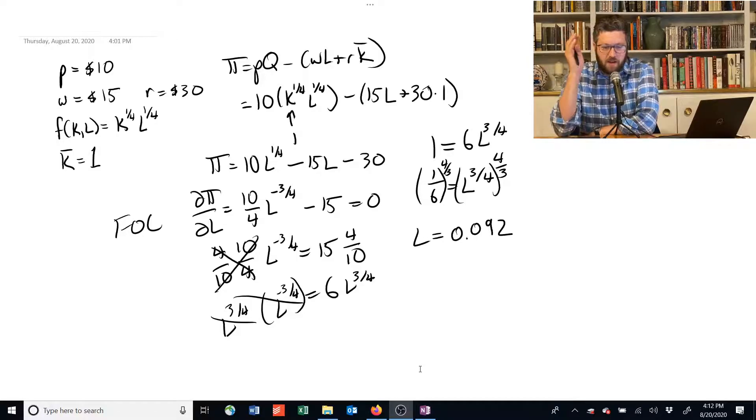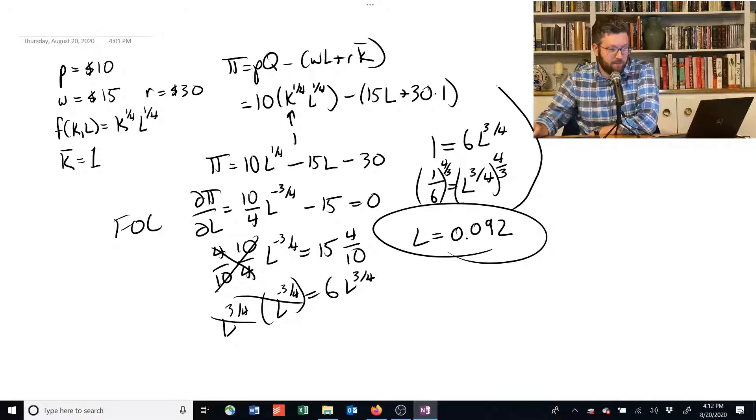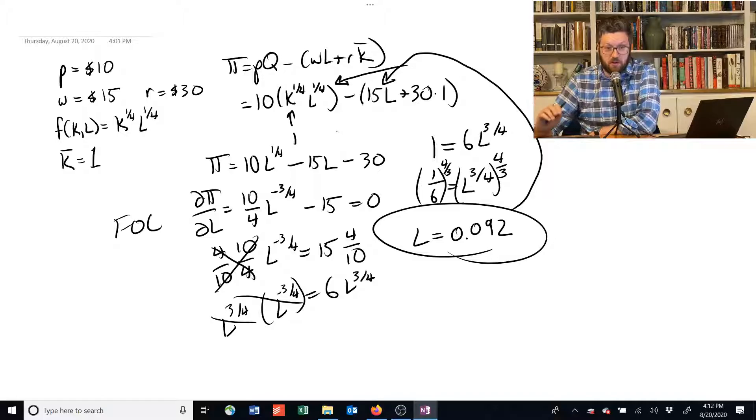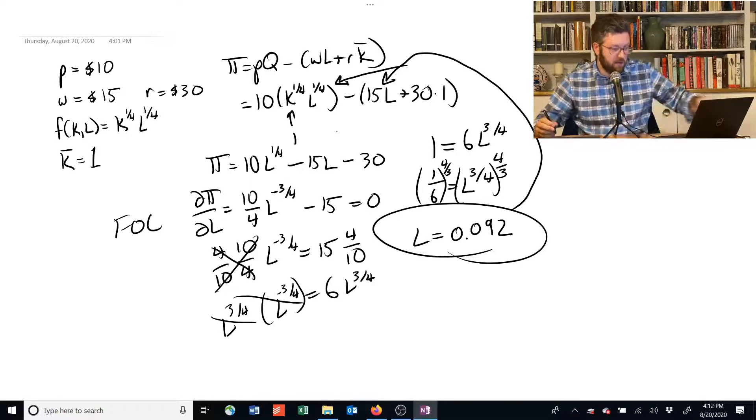If we wanted to find the actual amount of profit that the firm can get using this supply, what we would do is we would take this and plug that in for L up here. Okay? And then we basically got everything entered in. So I'll just do that quickly to show you it's not a trick.